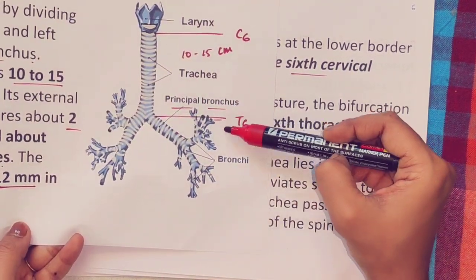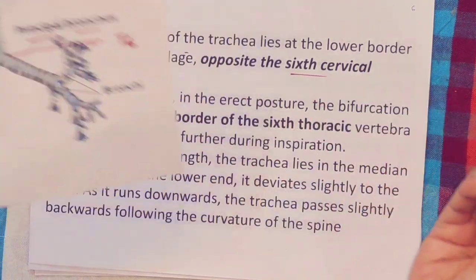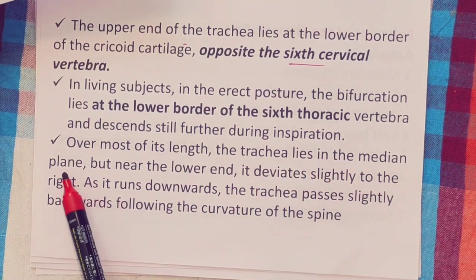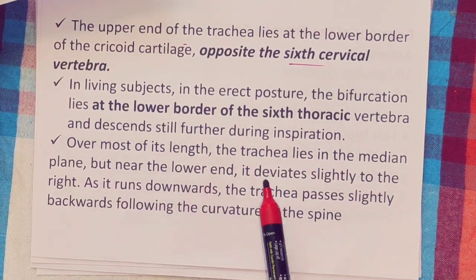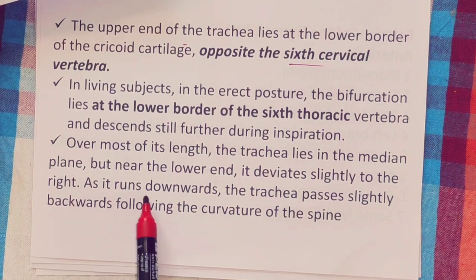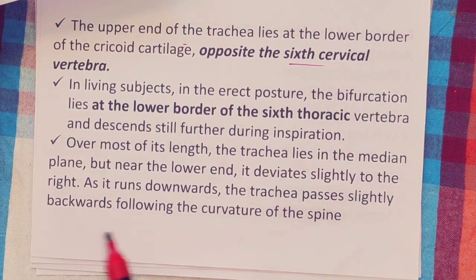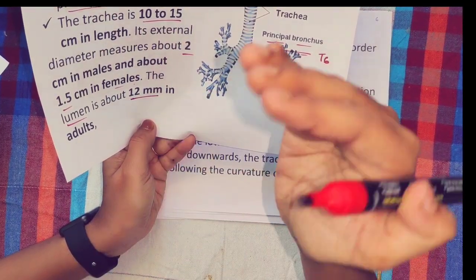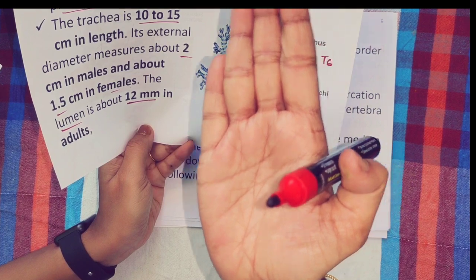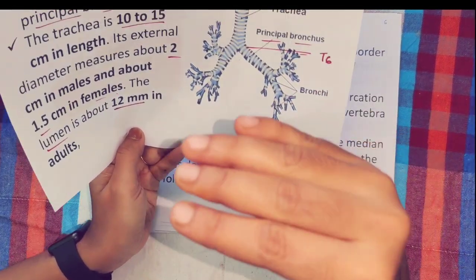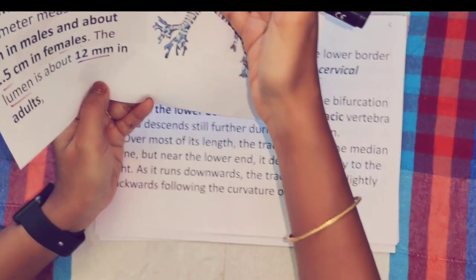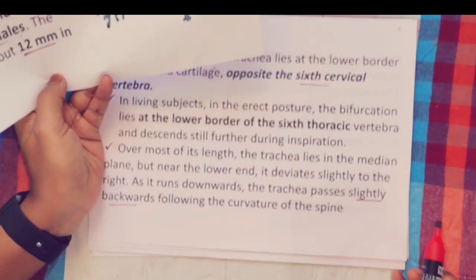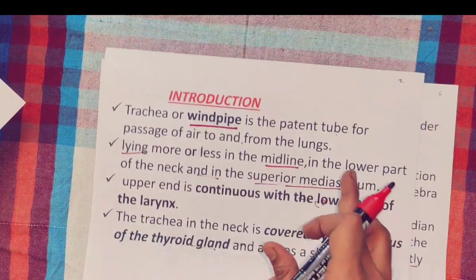The trachea lies in the median plane over most of its length, but near its lower end it deviates slightly to the right. As it runs downward, the trachea passes slightly backwards, following the curvature of the spine. The thoracic spine has a backward bend, while the lumbar spine curves forward.